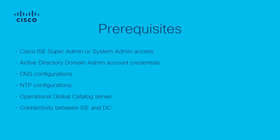The domain must have at least one operational global catalog server that is accessible by Cisco ISE. Finally, the ISE server must be able to reach the domain controller over TCP ports 389, 3268, 445, 88, 464, and UDP port 389.